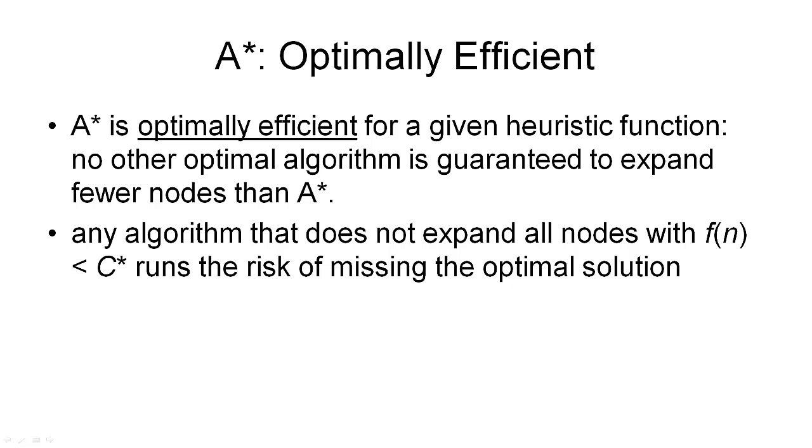Of course, there can still be a more efficient way of finding a solution to a given problem, namely if we have a different, more efficient heuristic. But for a fixed heuristic, A star is optimally efficient. Notice that efficiency here is counted in the number of nodes that are expanded. But of course, that's not the only thing that makes an algorithm efficient. For example, computing the heuristic function has a computational cost. But it does not count towards the number of nodes that we expand. So A star is only optimally efficient with respect to the number of nodes it expands.